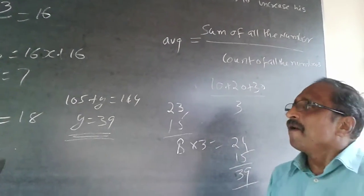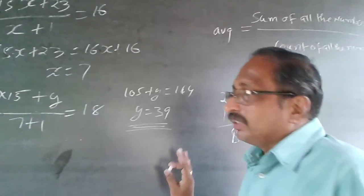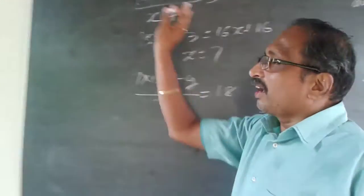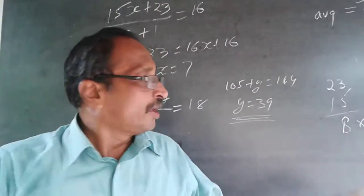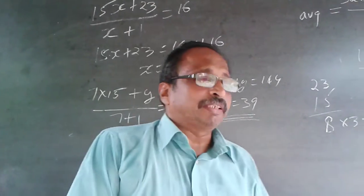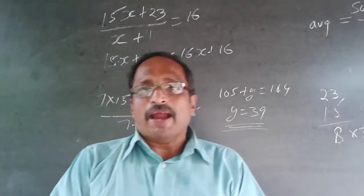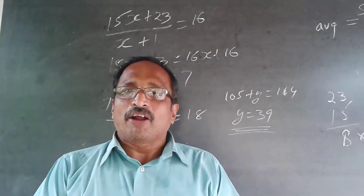This is simple. So 23 minus 15 equals 8 additional runs, which increases the average by 1. To increase by 3, that's 24 additional runs plus 15 equals 39. Follow this method. Subscribe to my channel — I will be adding questions every now and then.